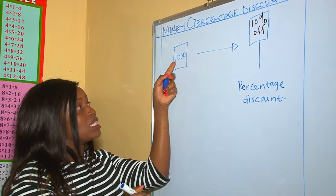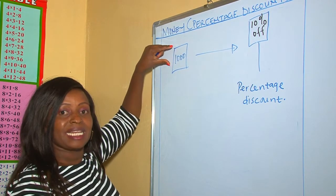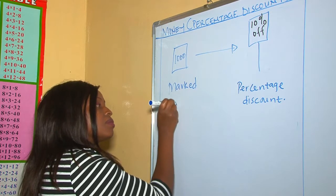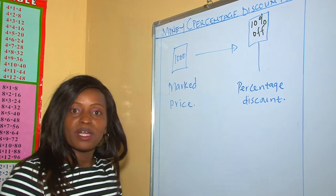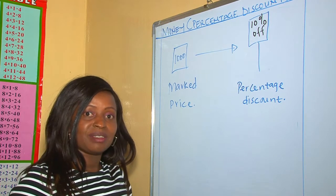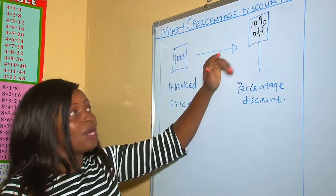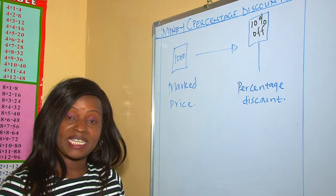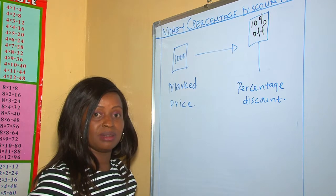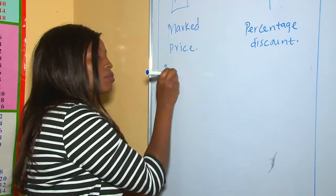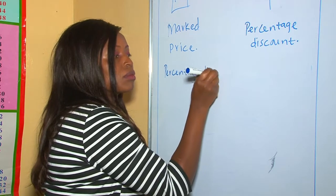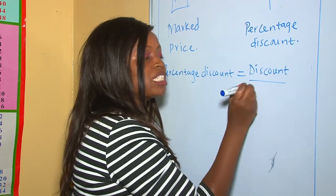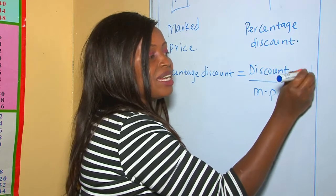The price written on an item or commodity is what we call the marked price. In this case, you are told you are going to buy the item with 10% less, because 10% has been taken off. This brings us into percentage discount. Percentage discount is equal to the discount divided by the marked price, multiplied by 100%.